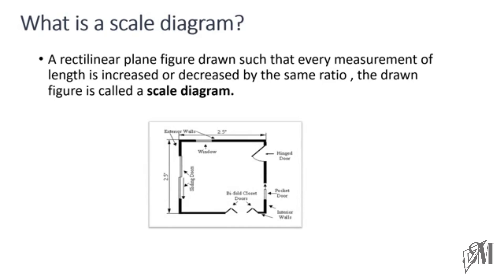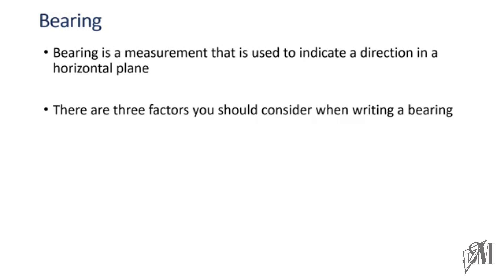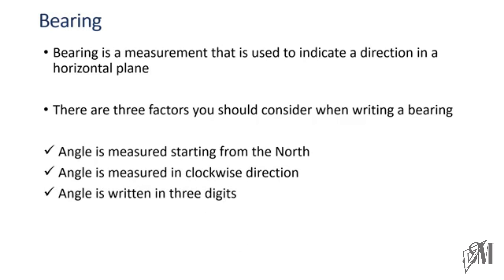We will also look into bearings. A bearing is a measurement used to indicate a direction in a horizontal plane. There are three factors when writing a bearing: the angle is measured starting from the direction of north, it is measured in a clockwise direction, and the angle must be represented using three digits.